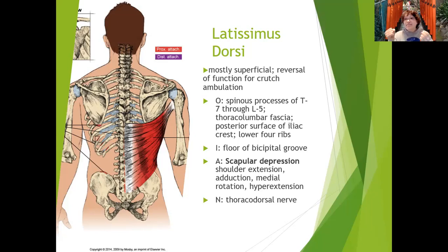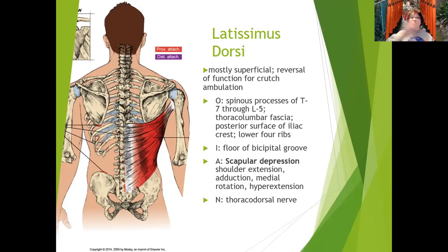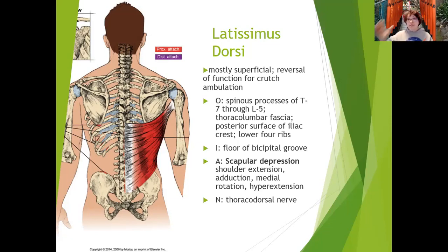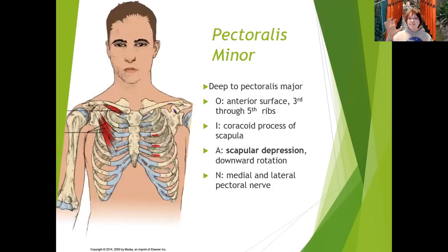Since the scapula is attached to the glenohumeral joint, when you pull it down, the scapula comes with it. The latissimus dorsi has its own nerve, the thoracodorsal nerve — if you think of it as being on the dorsal side of the thorax, that gives you the nerve name. It's a big muscle, so it needs its own nerve, and a lot of these trunk muscles have their own nerve.